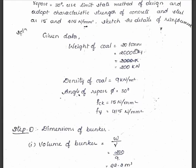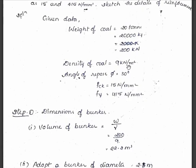From the given data: weight of coal is 20 tons, which is 20,000 kg. Since 1 kg = 10 newton, this gives 200,000 newton, that is 200 kilonewton. Density of coal is 9 kilonewton per meter cube. Angle of repose phi is 30 degrees. fck is 15 newton per mm square. fy (grade of steel) is 415 newton per mm square.